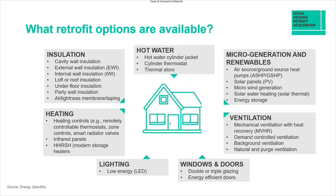So what retrofit options are available? Retrofits can involve some or all of these measures, depending on the project budget and baseline energy performance. Measures such as external wall insulation, for example, are relatively high risk and are deemed as structural work. This work will also require consent from the local council's building control team or even planning, depending on the location or significance of the building. When identifying any of these measures, it is important to consider the value in terms of payback and carbon cost effectiveness to determine what the impact will look like.